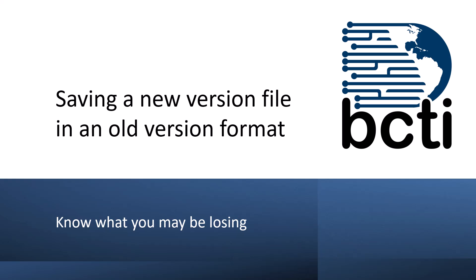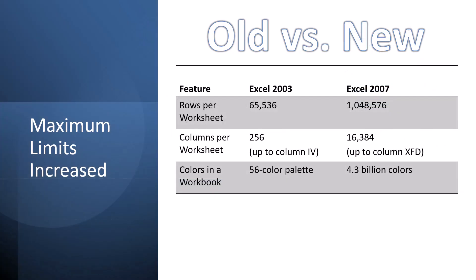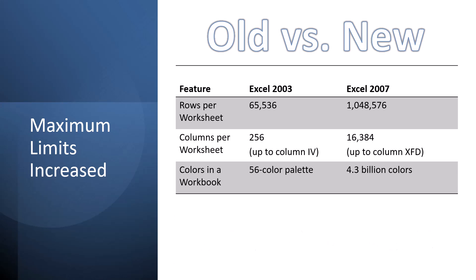This is by no means a comprehensive list of differences, but it covers some of the major structural differences — the limits of Excel, old versus new. In old Excel, we maxed out at 65,000 rows; in newer Excel, just over a million. In old Excel, we had 256 columns, A through IV; in the new version, we have 16,384 columns, A through XFD. In old Excel, we were limited to 56 colors in the color palette.